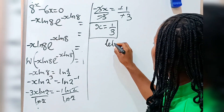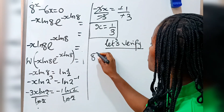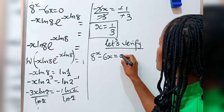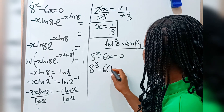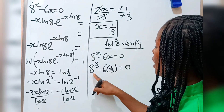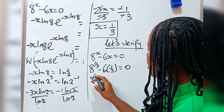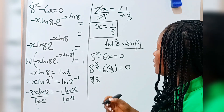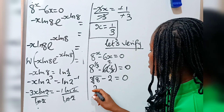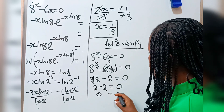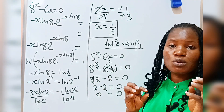Now let's verify. The equation says 8 to the power of x minus 6x is equal to 0, and x is 1 over 3. So you are going to have 8 to the power of 1 over 3 minus 6 times 1 over 3 is equal to 0. Now 8 to the power of 1 over 3 is the same as cube root of 8, which equals 2. And 6 times 1 over 3 gives us 2. So 2 minus 2 is 0, and 0 equals 0. You can see that the left-hand side equals the right-hand side, which proves that the solution is correct.